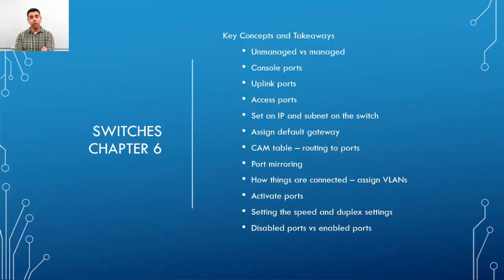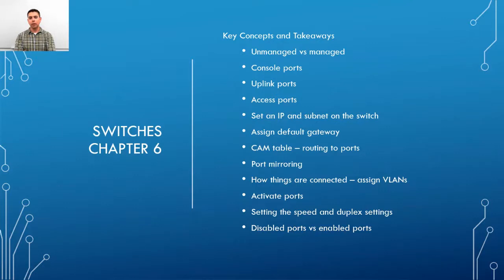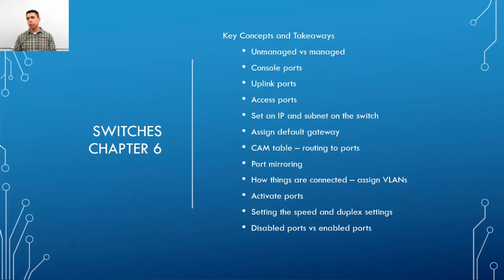There's a CAM table, which is the routing-to-port table. The switch doesn't route - it forwards traffic - but in a sense it's like a routing table: a list of ports, how they're configured, how it can send traffic to those ports, and who resides there. There's also port mirroring, a term you'll need to be familiar with, which means you can make another port on the switch duplicate another port. That's useful for troubleshooting.